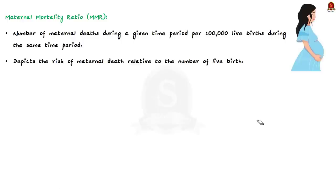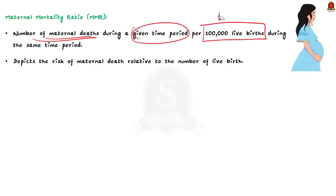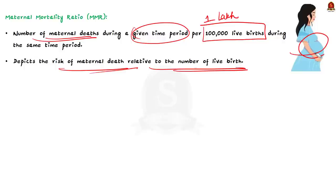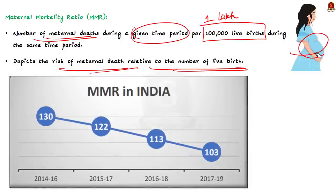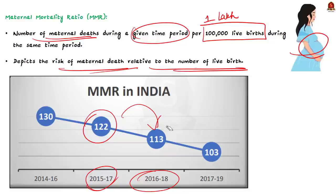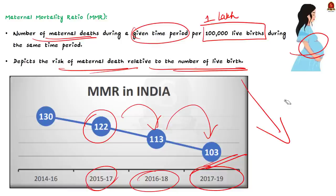The maternal mortality ratio is defined as the number of maternal deaths during a given time period per 1 lakh live births during the same period. It depicts the risk of maternal death relative to the number of live births and captures the risk of death in a single pregnancy or a single live birth. As per the SRS, the maternal mortality ratio of India has reduced from 122 per 1 lakh live births in SRS 2015–17, to 113 in SRS 2016–18, and to 103 in the 2017–19 report. This is very good news — the MMR is declining.